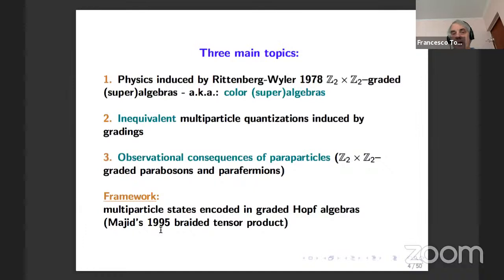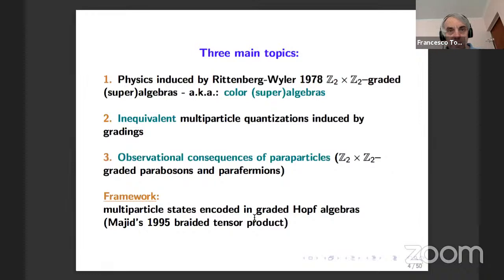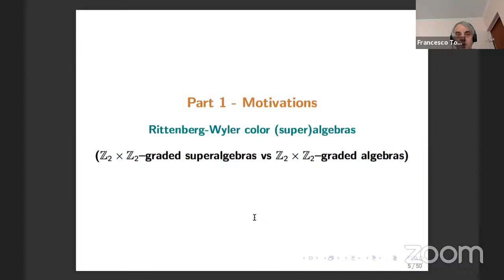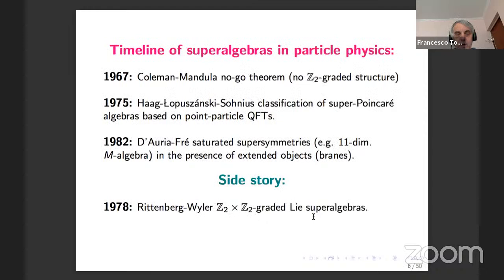I use a framework which I phrase as first quantization of braided theory, encountered in the 1995 book of Majid. In this application it is based on graded Hopf algebras — the universal enveloping algebra of a graded algebra — also with a braided tensor product. The motivation comes from two types of constructions introduced by Rittenberg and Wigner: superalgebras and N-algebras.